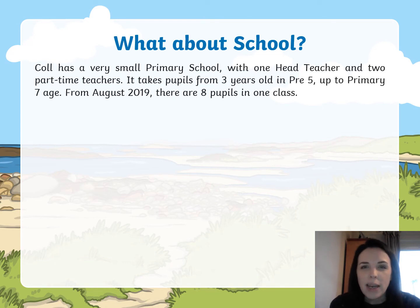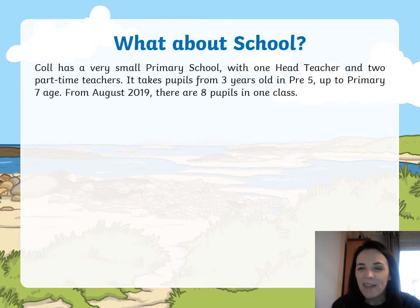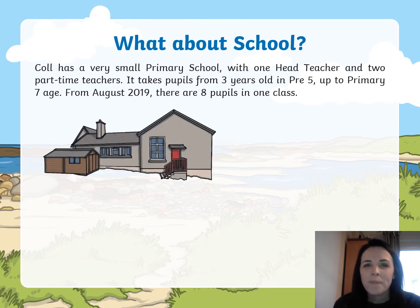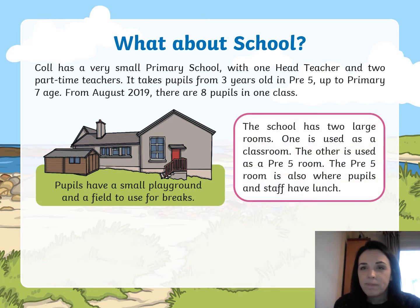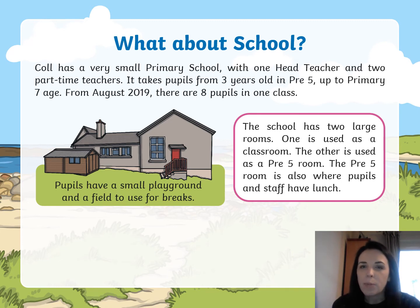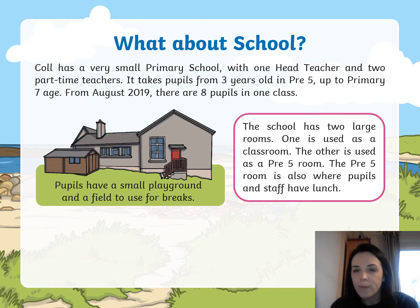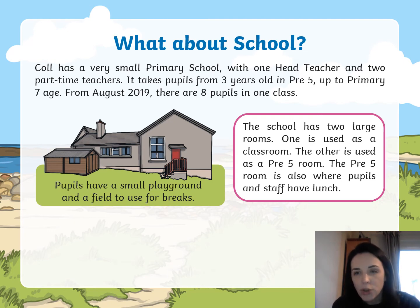From August 2019, there were eight pupils in one class — I wonder how old those children would be. There's only eight of them. They've got a very small playground and a field to use for their break times. The school has two large rooms: one is a classroom and the other is used as a pre-five room for children under five, like nursery children — but all of the other children are in together. This pre-five room is also where the pupils and staff have their lunch, a bit like what we did on Christmas dinner — everybody has their lunch together.